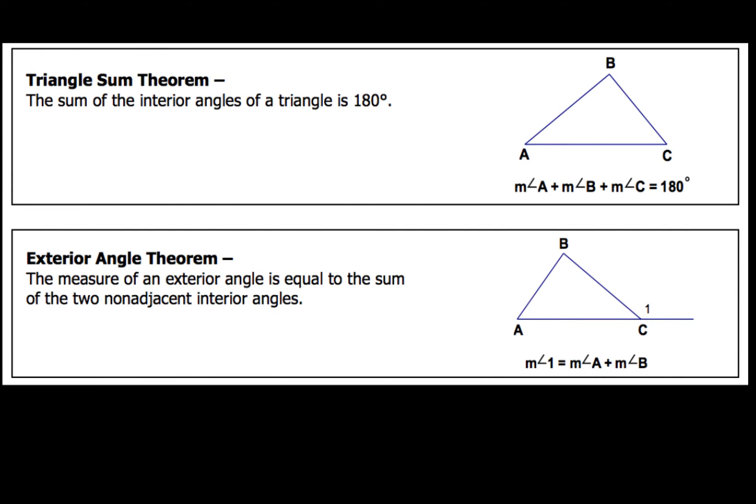Triangle sum theorem and the exterior angle theorem. Triangle sum theorem just says that the sum of the interior angles of a triangle is 180 degrees. So all three angles on the inside always add up to 180.